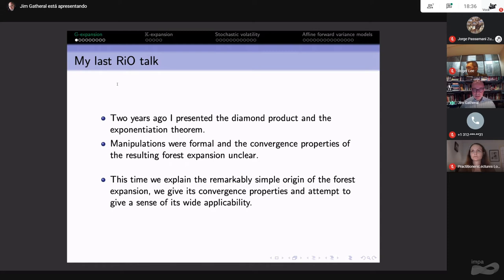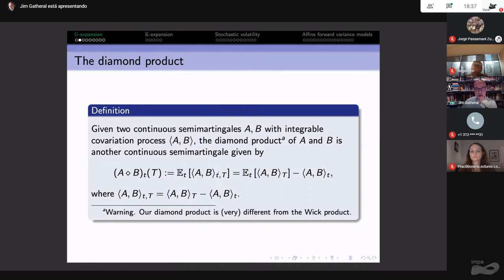Let's start with the definition of the diamond product. Given two continuous semi-martingales, not martingales but semi-martingales, A and B, with an integrable covariation process, the diamond product of A and B is another continuous semi-martingale. A diamond B is just the conditional expectation of the quadratic covariation of A and B.